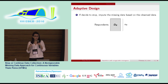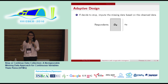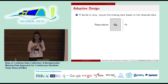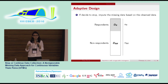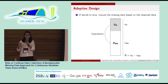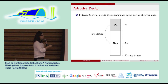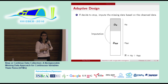If we decide to stop — the first option — we need to impute the missing data, what we still haven't observed, based on what we have observed. We have our respondents and our non-respondents, and in order to get a complete dataset we're going to impute the non-respondents based on what we have observed.